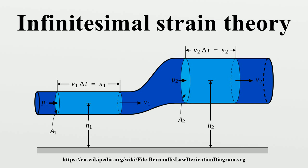Furthermore, since the deformation gradient can be expressed as where I is the second-order identity tensor, we have also, from the general expression for the Lagrangian and Eulerian finite strain tensors, we have the geometric derivation of the infinitesimal strain tensor.